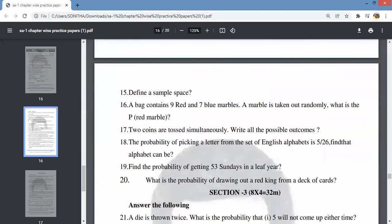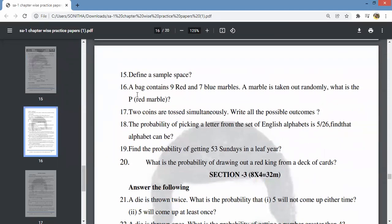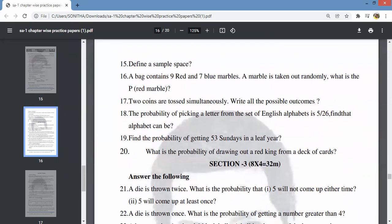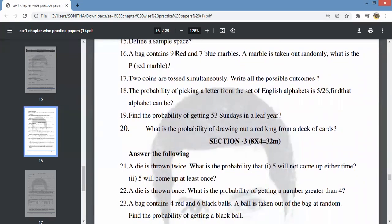Define sample space. Each chapter has definitions like mutually exclusive events and sample space. These definitions are important. Question 16: A bag contains 9 red and 7 blue marbles. A marble is taken at random. The probability of red marble is 9 out of 16, so 9 by 16.